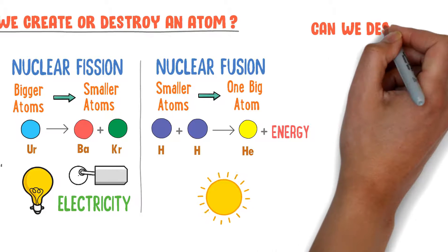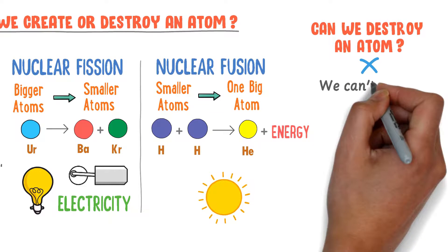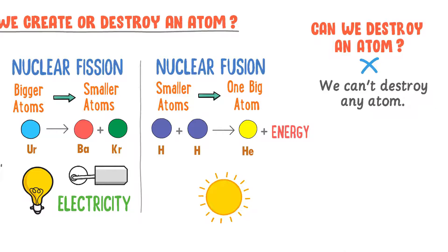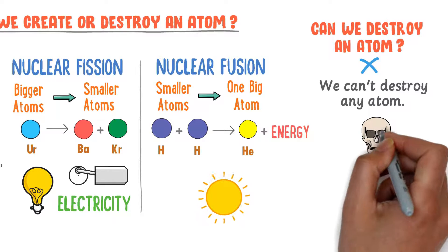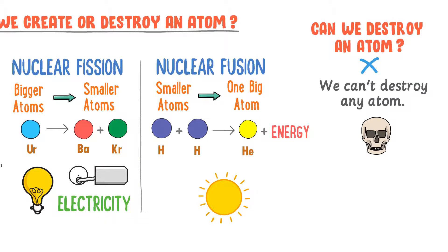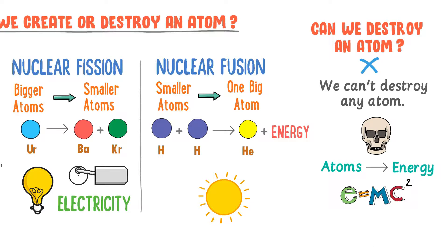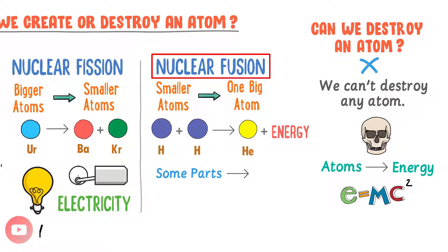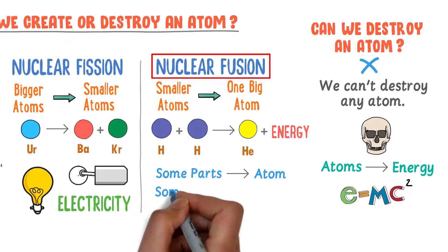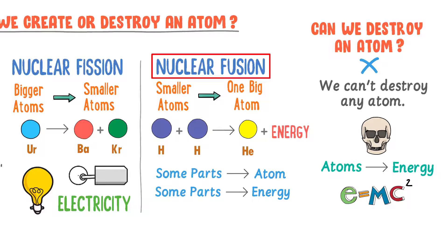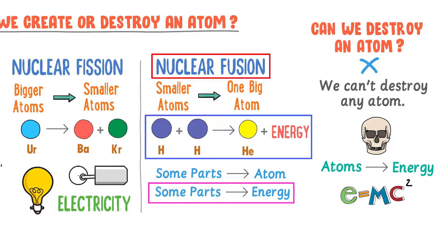Now coming to the second part, can we destroy an atom? The answer is no. We cannot destroy any atom even if an organism dies. Still, the atoms cannot be destroyed. But atoms can be converted into energy according to Einstein's famous equation E = mc². For example, in the fusion reaction, some parts of the atoms are converted to form a big atom like helium, and the remaining parts of the atoms are converted to energy. Thus, we say that mass or atom is converted into energy in nuclear fusion reaction, but mass or atom cannot be destroyed.